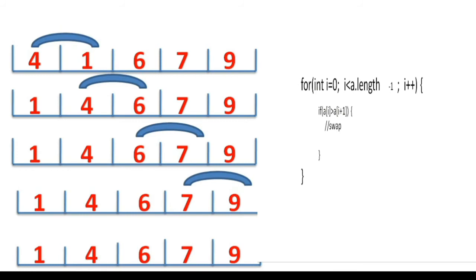We'll add one outer loop for multiple rounds. The inner loop checks adjacent elements in one round; the outer loop keeps performing rounds until we get the final sorted array. The outer loop goes from n equal to 0 to n less than a.length, n++. In our case the array was sorted in three rounds, so running up to a.length would waste two extra rounds. To handle this, we use a flag.